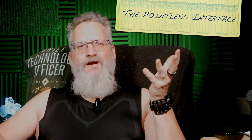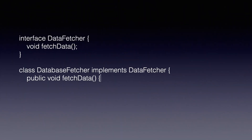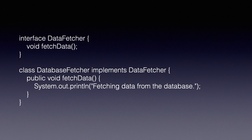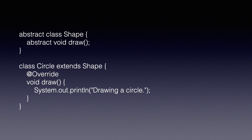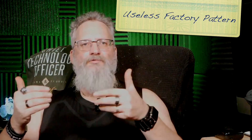Let me show you how speculative generality sneaks into your code and wastes everyone's time. Here's a classic: why is there an interface? Because someone thought we'd eventually need a file fetcher or an API fetcher. But guess what? It never happened. This interface just sits there like an awkward third wheel. And then there's this little gem — why does this even exist? Are we opening an art studio? No. It's just one shape. This level of abstraction adds zero value but doubles the complexity. And don't get me started on developers who slap the factory pattern into a five-class app because 'you never know, we might need it.' You won't.